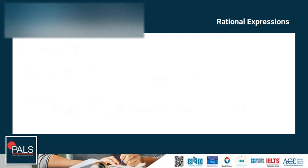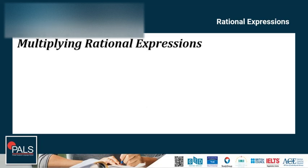Let's proceed to multiplying rational expressions. When multiplying rational expressions, a common denominator like in addition and subtraction is not necessary. Instead, the expressions are always multiplied straight across. Sometimes you will need to simplify the result before you have a final answer. You will use cross-cancelling to simplify before multiplying to make things easier.